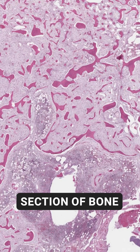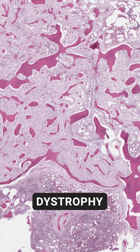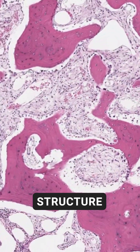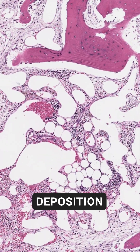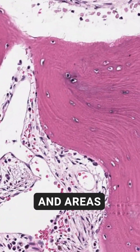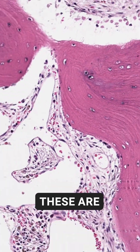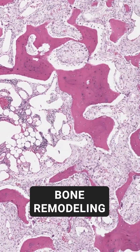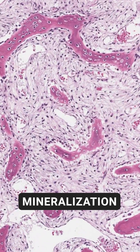This is a histologic section of bone affected by renal osteodystrophy. Notice the disorganized trabecular structure, increased osteoid deposition, and areas of marrow fibrosis. These are hallmarks of abnormal bone remodeling and impaired mineralization.